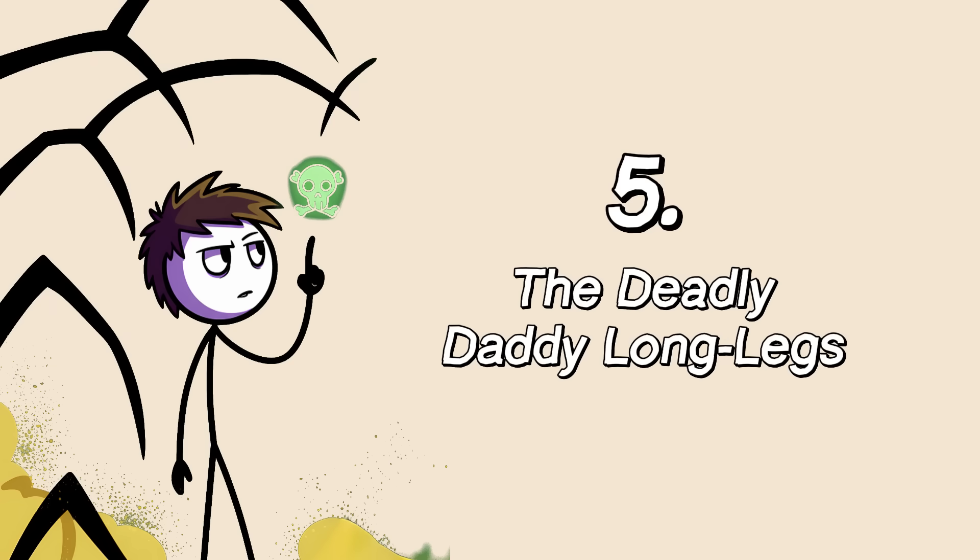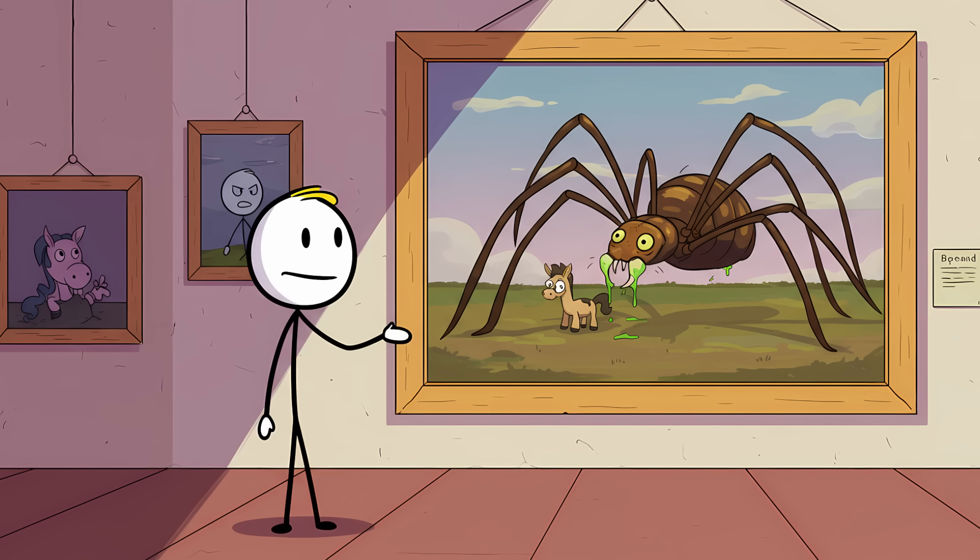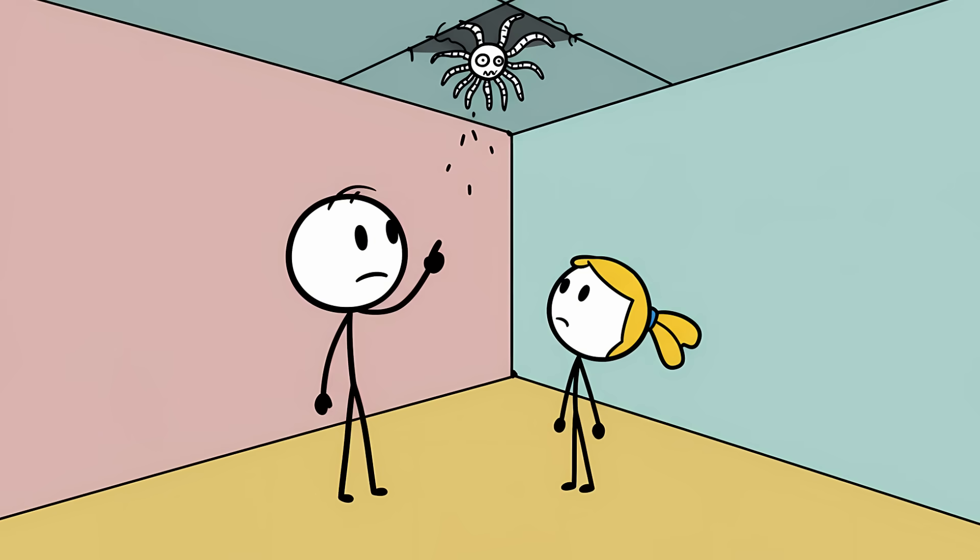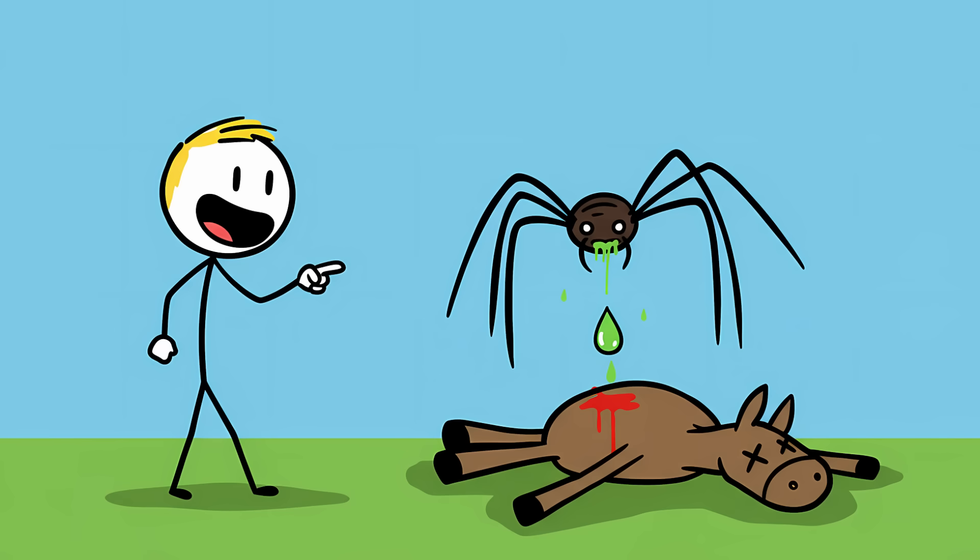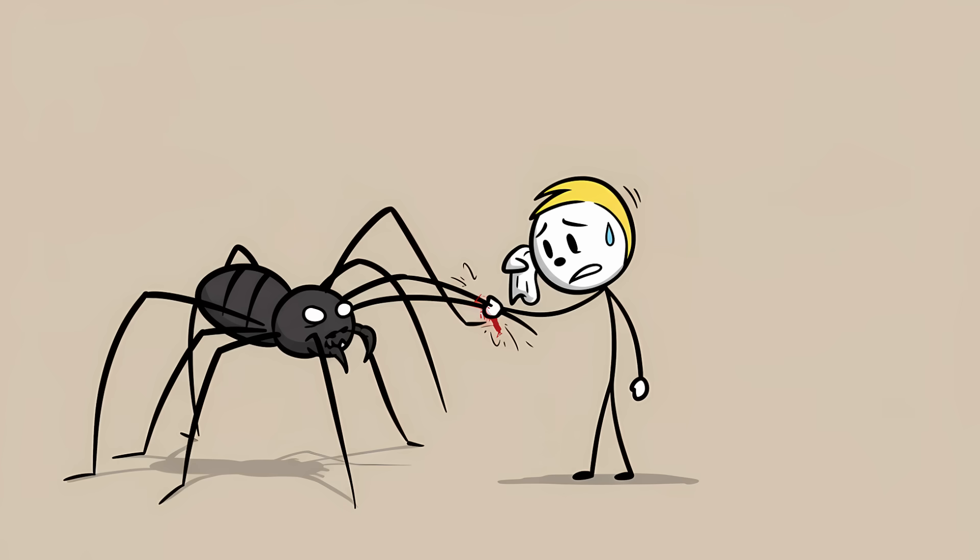Number five. The Deadly Daddy Longlegs. Every schoolyard has its own resident biologist, the kid who confidently shares nature facts with the unshakable authority of a seasoned professor. And their magnum opus is always the legend of the Daddy Longlegs. You see that thing? They'll whisper, pointing to a spindly creature in the corner of the ceiling. It's the most venomous spider in the world. Its poison could kill a horse in seconds. The only reason it doesn't kill us is because its fangs are too small and weak to pierce human skin.